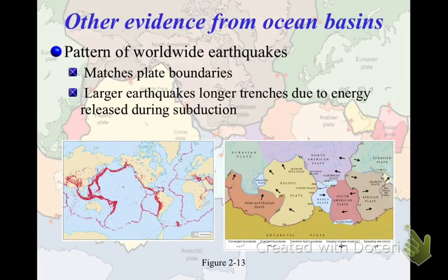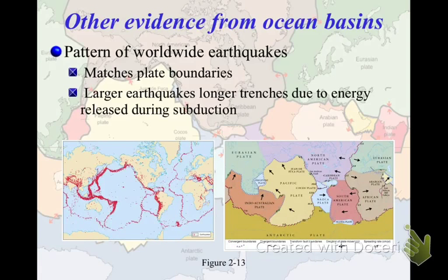Additionally, seismometers to measure earthquakes are becoming much more widely distributed across the planet. We've discovered a pattern of worldwide earthquakes, and if you map where most earthquakes occur, it actually matches our plate boundaries very well. Larger earthquakes are found along trenches, and weaker earthquakes are found at mid-ocean ridges — which is what you'd expect, since destroying something takes more energy. So there's a lot of evidence that supports the seafloor spreading idea, and you need to know the evidence for seafloor spreading as separate from the evidence for continental drift.